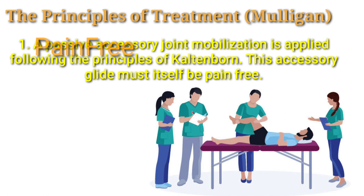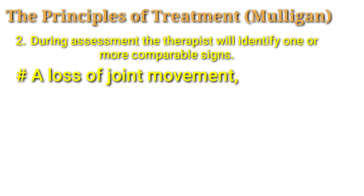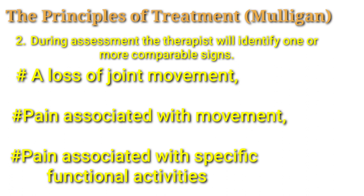Number two: during the assessment, the therapist will identify one or more comparable signs. Comparable signs include loss of joint movement, pain associated with movement, or pain associated with specific functional activities. According to Mulligan, during the assessment, we have to focus on comparable signs.